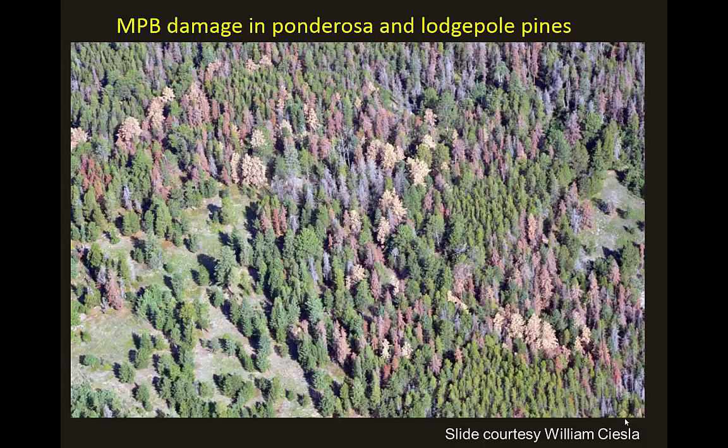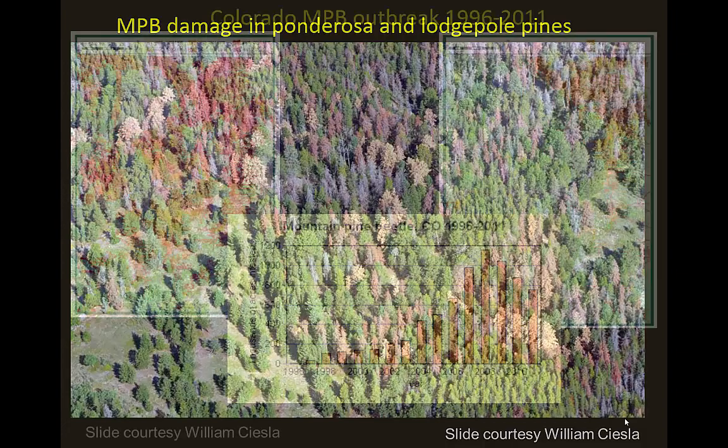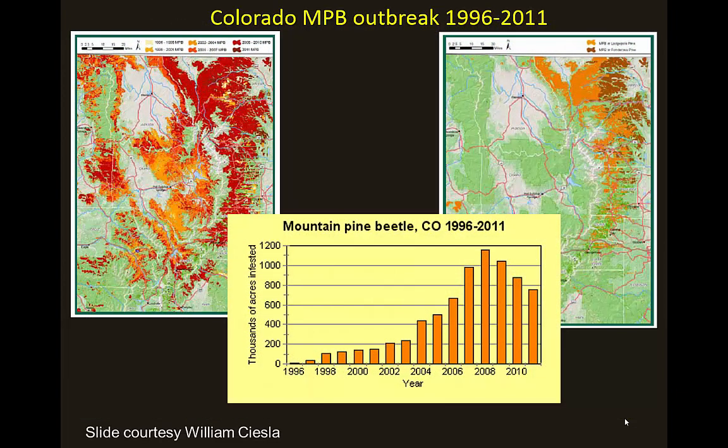That outbreak caused millions and millions of trees to have been killed. The typical symptom you'd see in an area affected by mountain pine beetle is trees changing color — usually turning a kind of brick red first, then a lighter color, and then losing all the needles. The most recent outbreak started to ramp up in the early 2000s.